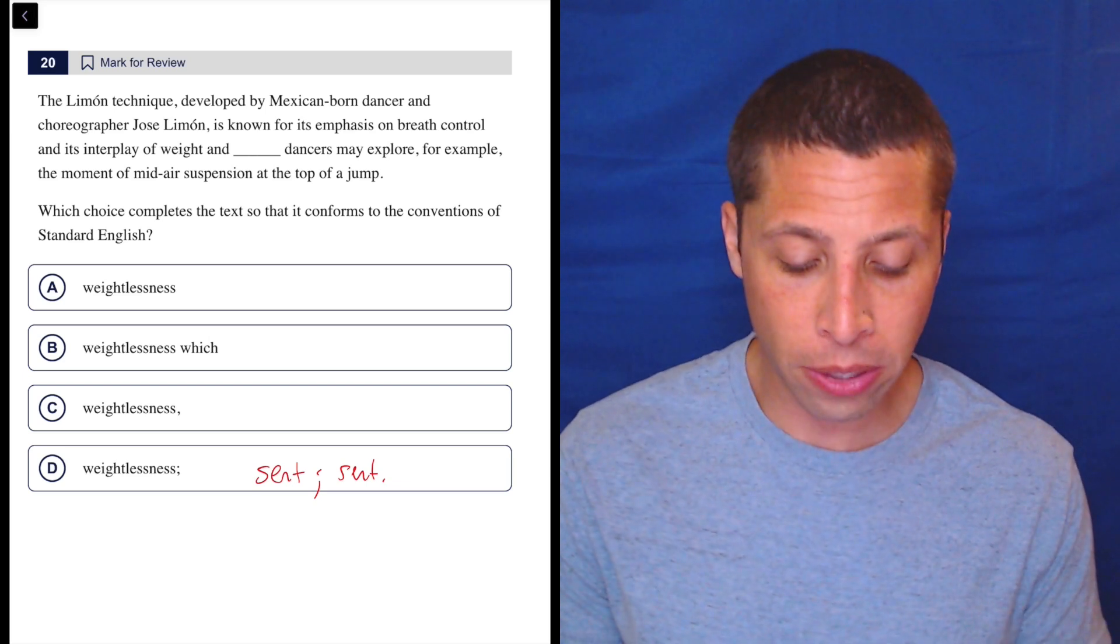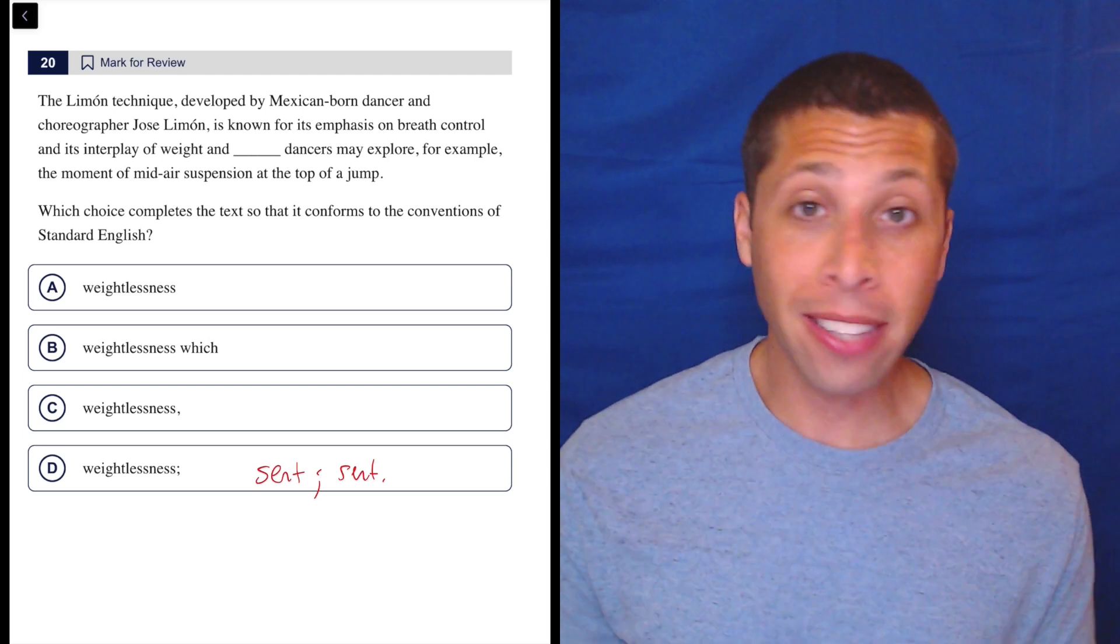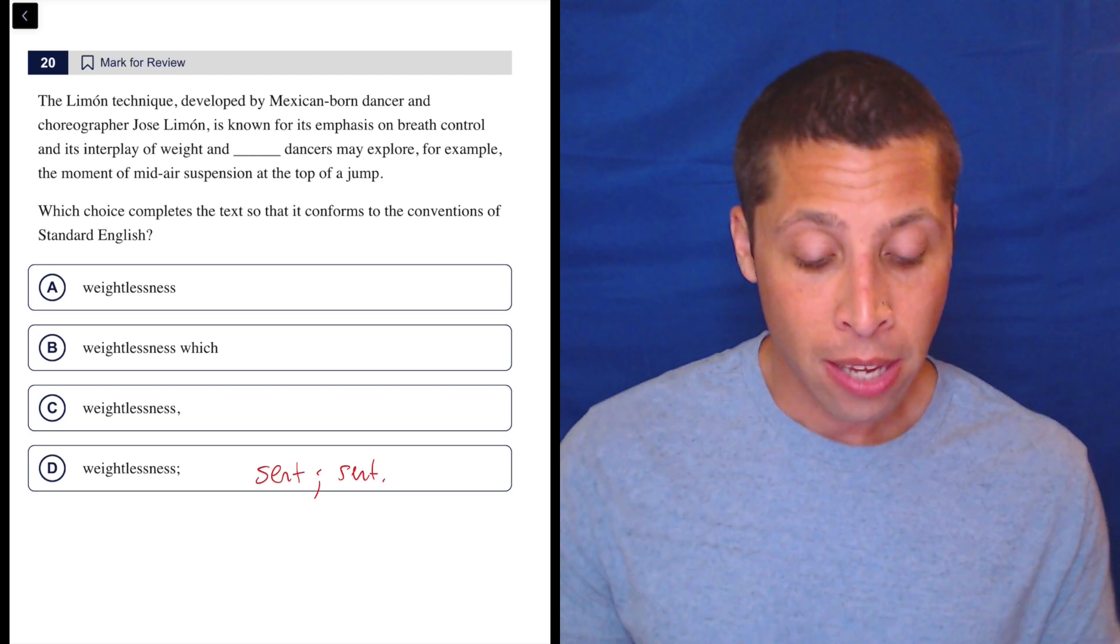So as soon as I see it in choice D, that's where my brain goes. I have an easy test. If there are two complete sentences, that's it. Game over. It's got to be D.